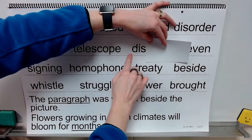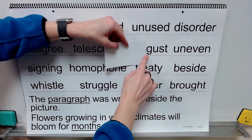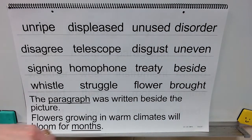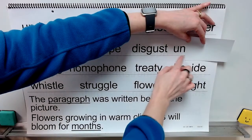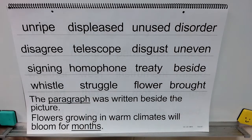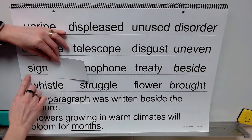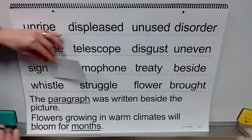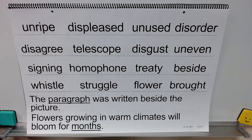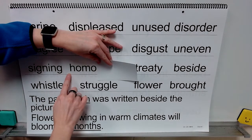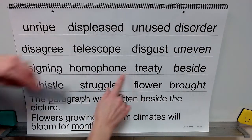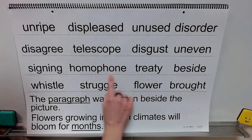Syllable dis, syllable gust, word: disgust. Prefix un, base: even, word: uneven. Base word: sign, ending: ing, word: signing. Root: homo, another root: phone, whole word: homophone. We adjust for the pronunciation.